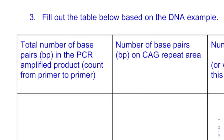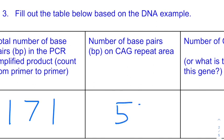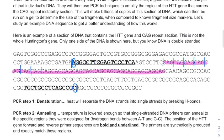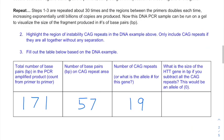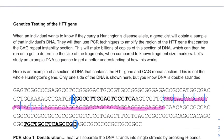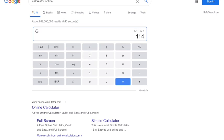Check your answers now. The total number of base pairs, if you counted correctly, would be 171 in the PCR amplified region of DNA. The total number of base pairs in the CAG repeat section is 57. How many trinucleotide repeats are there? There's a total of 19 repeats in this section of DNA — good news for someone, because that allele for the HTT gene would not result in Huntington's. And the size of the HTT gene if you subtract all the repeats: 171 minus 57 equals 114.